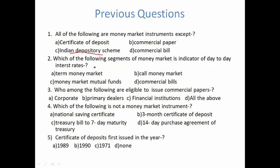Which segment of the money market is an indicator of day-to-day interest rate? The answer is call money market. Who is eligible to issue commercial paper? The options are corporates, primary dealers, financial institutions, or all of the above. The answer is all of the above — commercial papers can be issued by corporates, primary dealers, and financial institutions, provided they have capital of above 5 crore.